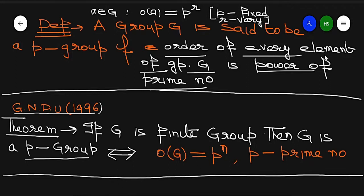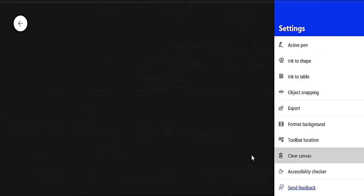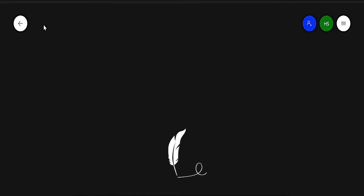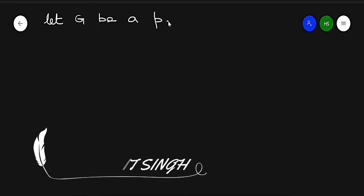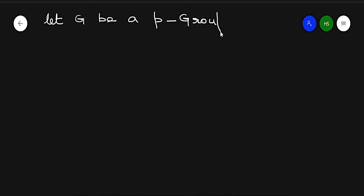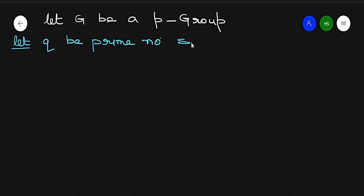To prove this result, there are two parts. Let G be a P-group — meaning the order of every element is a power of the prime P. Now let q be another prime number such that q divides the order of G.